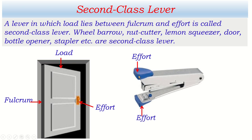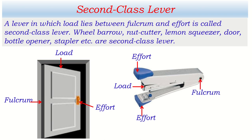The stapler is a second class lever because effort is applied at one end, the stapler pin lies inside — between the fulcrum and the effort — and this is the fulcrum which doesn't move. This way we can identify second class levers where load lies between effort and fulcrum.